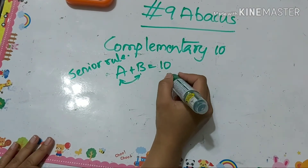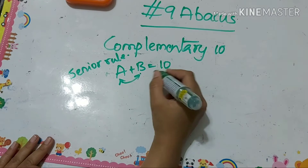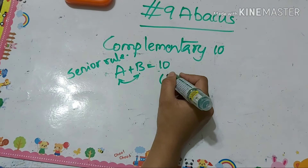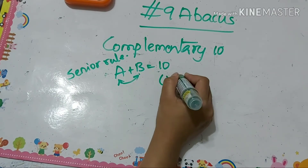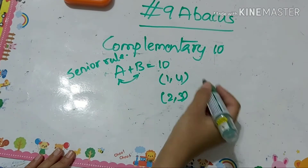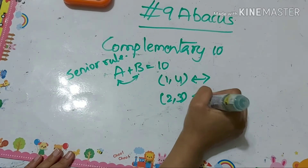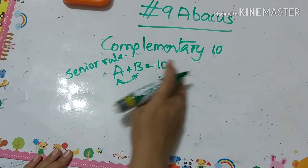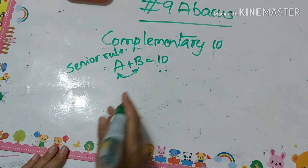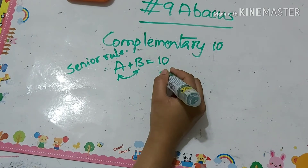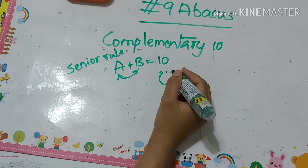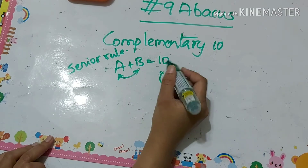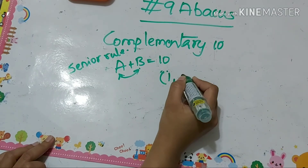In the earlier complementary-with-respect-to-5 method, we had pairs of elements whose sum is 5, like 1 and 4, 2 and 3 — these are friends to each other, and vice versa pairs also exist. Using those pairs we derived formulas. Here, similarly, we have pairs of elements whose sum is 10, and those pairs are friends to each other.